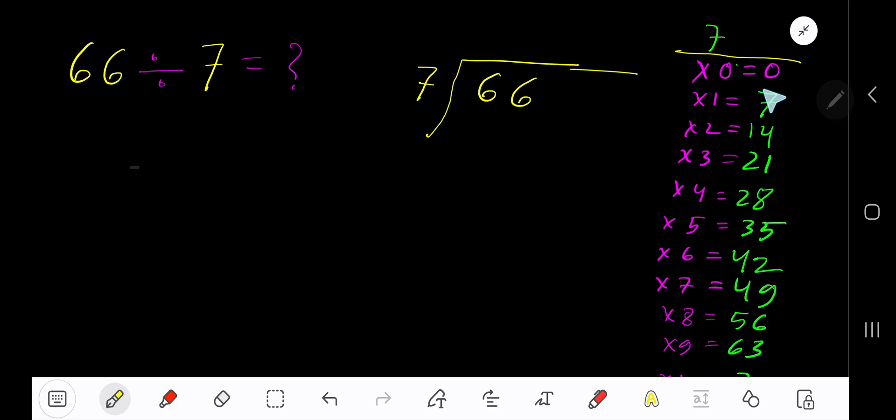To find the multiplication table of 7, just add 7 to the previous tip: 0 plus 7 is 7, 7 plus 7 is 14, 14 plus 7 is 21, 21 plus 7 is 28. This process continues. 7 goes into 6 how many times? 0 times, as 6 is less than 7.